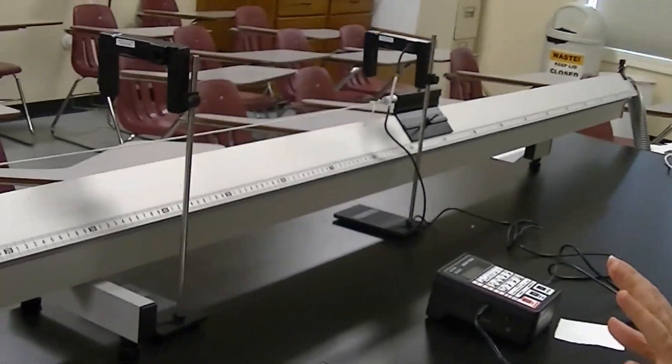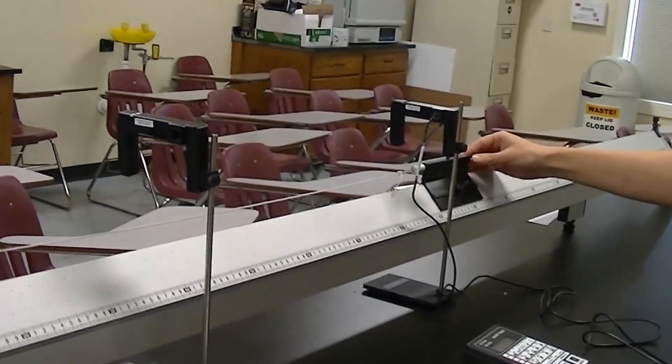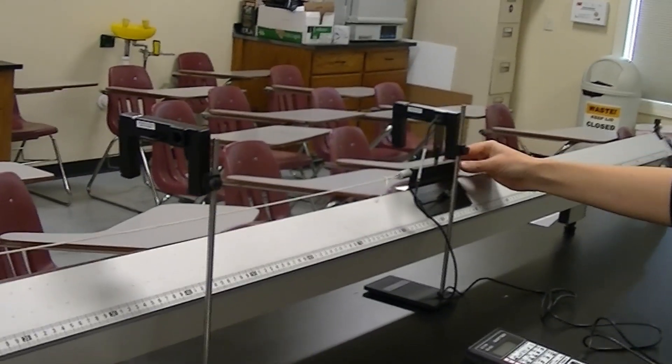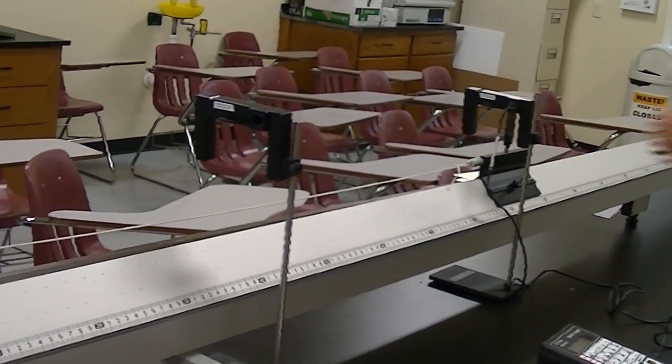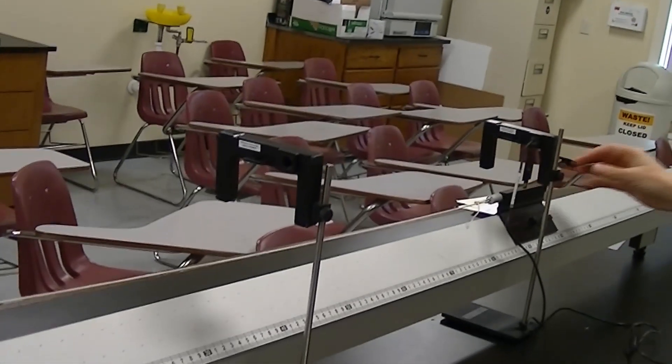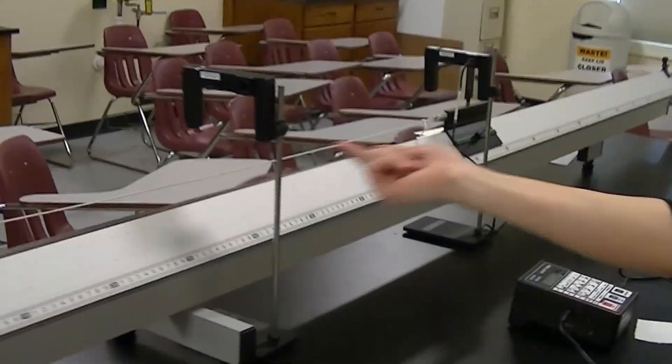So when I start this experiment, what I want is for this glider to be as close to my first gate as possible. Once I turn the air on, the hanging mass is going to apply force. It's going to pull this glider so that it moves through both gates.